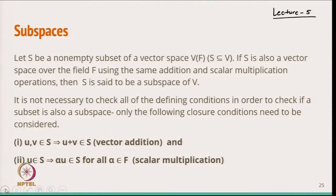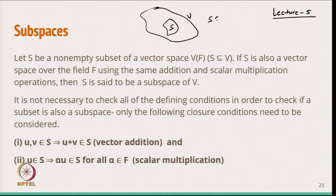In the previous lecture we saw that suppose this is some vector space V. Now, we want to define: in the vector space, all the properties are satisfying vector addition and scalar multiplication. Now we want to see what will happen if we have some subset. Suppose we take the subset S, so S is a subset of V. The vector space V is defined over the field F, and S is a subset of V.